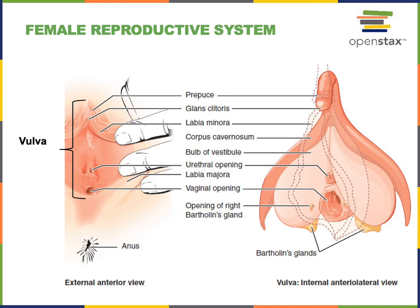The clitoris has an external region known as the glans, located anterior to the urethra in the vulva. There are also internal regions of the clitoris. The bulb of the vestibule is an internal region located deep to the labia surrounding the vagina, and the crura of the clitoris extend deep along the inferior pubic ramus of the pubic bones. The clitoris becomes engorged with blood during sexual arousal and contains numerous sensory nerve endings responsible for sexual stimulation.